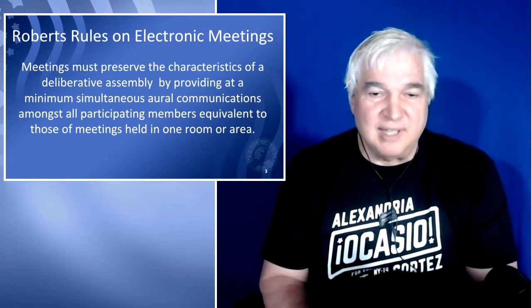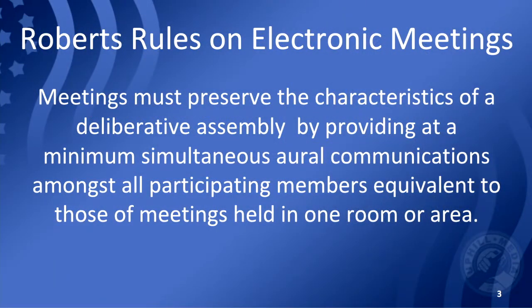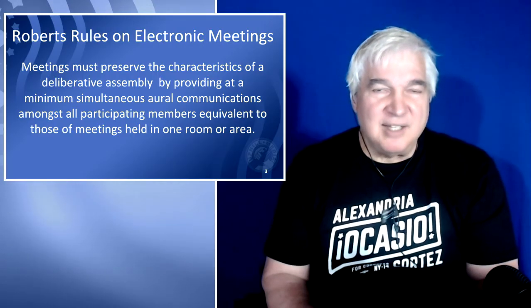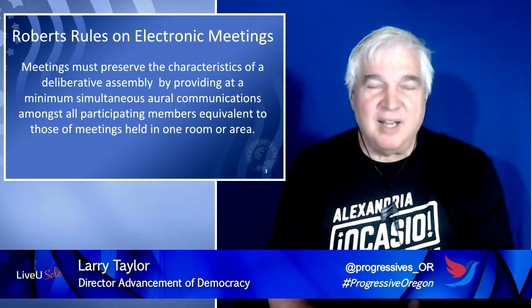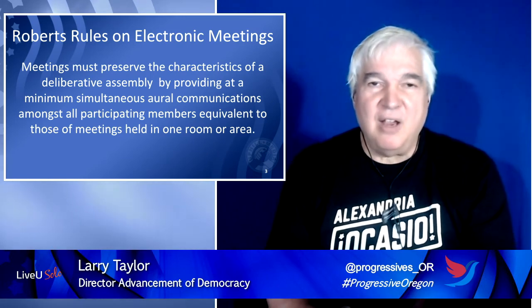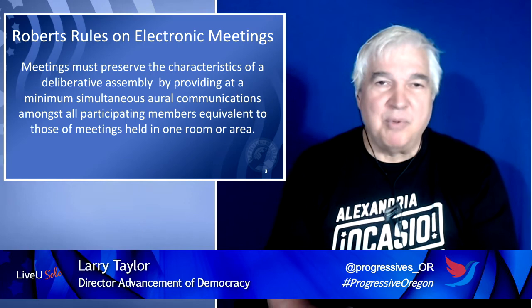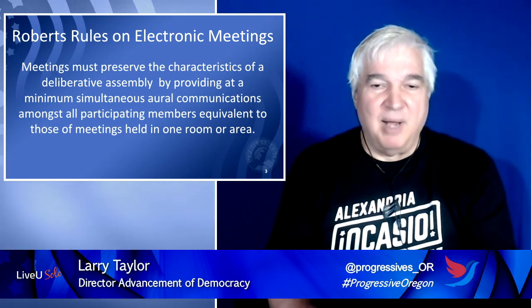This is what Robert's Rules says about them: meetings must preserve the characteristics of a deliberative assembly by providing, at a minimum, simultaneous oral communications amongst all participating members equivalent to those of meetings held in one room or area. Robert's Rules doesn't like people not being together, but they recognize the importance and convenience of electronic meetings, and so they encourage organizations to come up with rules that as closely approximate everyone being in a room together as possible.